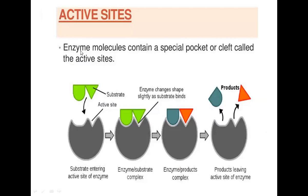Moving to the active site — the enzyme molecule contains a binding site where the substrate molecule binds. The enzyme has two regions: the active site and the binding site. The substrate comes in and binds with the enzyme to form the enzyme-substrate complex. The enzyme-substrate complex changes shape slightly, the substrate binds more compactly, and then the product is formed and leaves — while the enzyme remains intact.